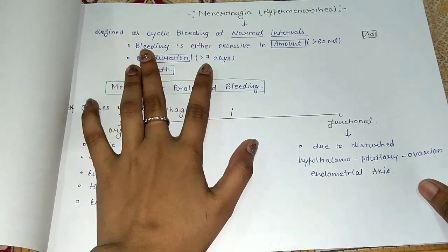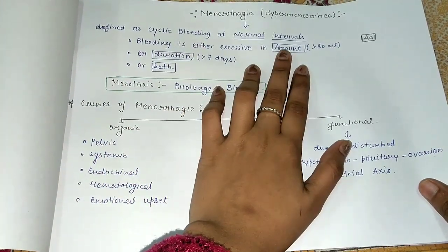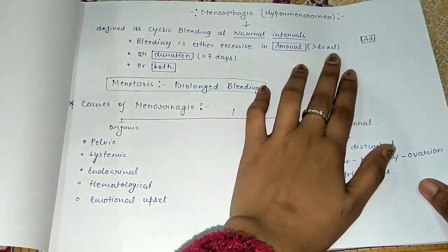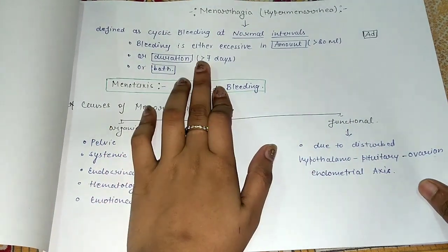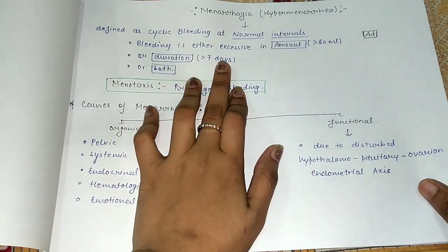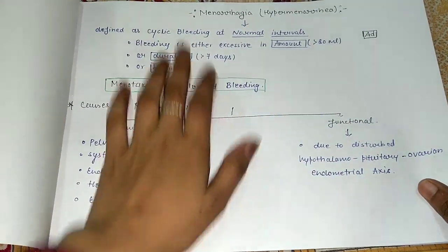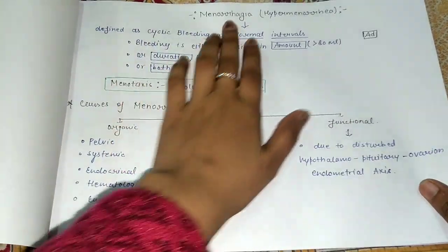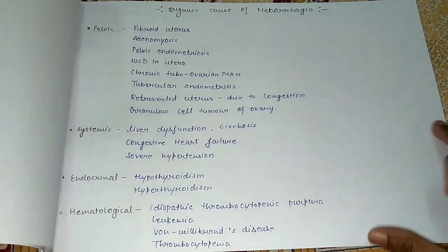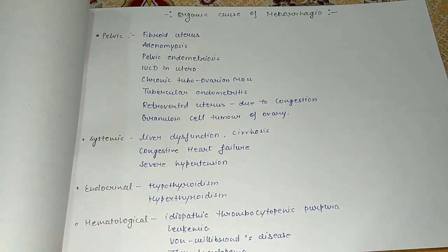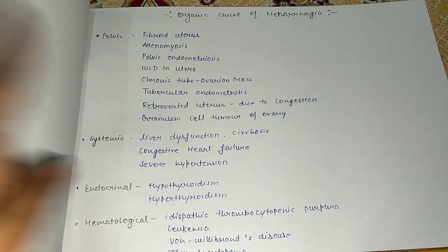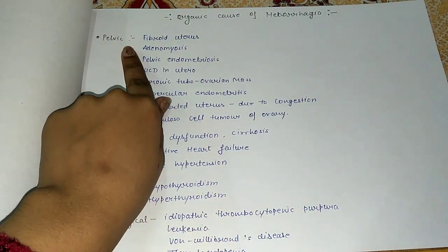Menorrhagia is when bleeding is either excessive in amount — that means more than 80 ml — or lasting more than 7 days. These two things we call menorrhagia. Today we will discuss what can cause more bleeding, starting with pelvic reasons.